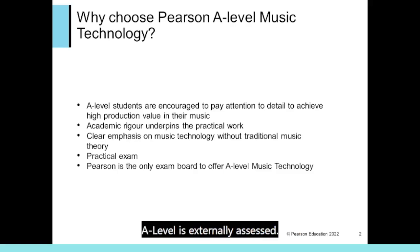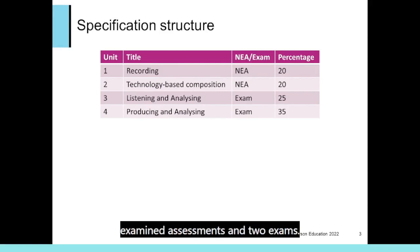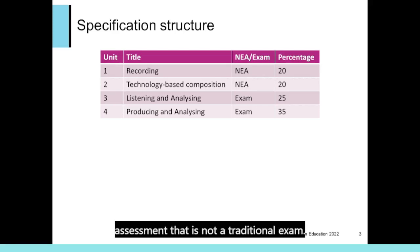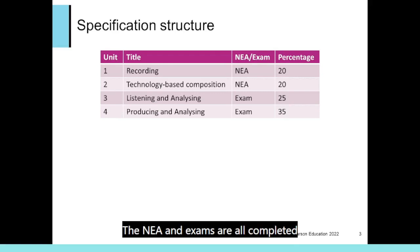A-Level is externally assessed. There are four units: two practical non-examined assessments and two exams. NEA, or non-examined assessment, is the assessment that is not a traditional exam. For music technology, NEAs are coursework tasks. The NEA and exams are all completed in the second year of study.